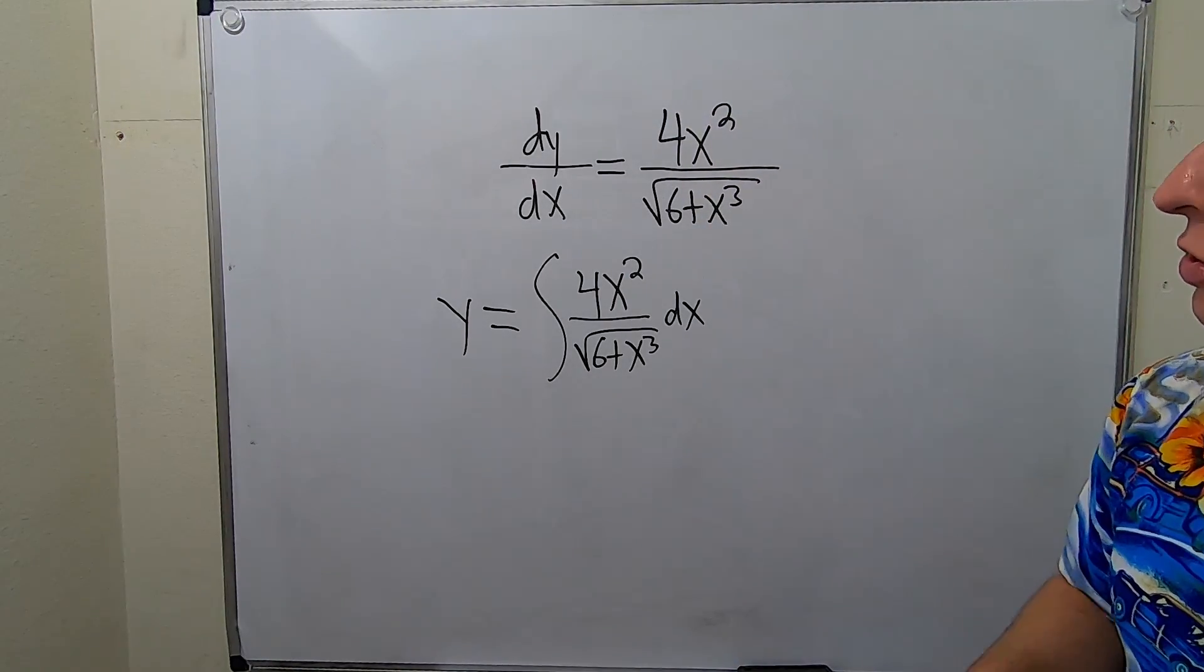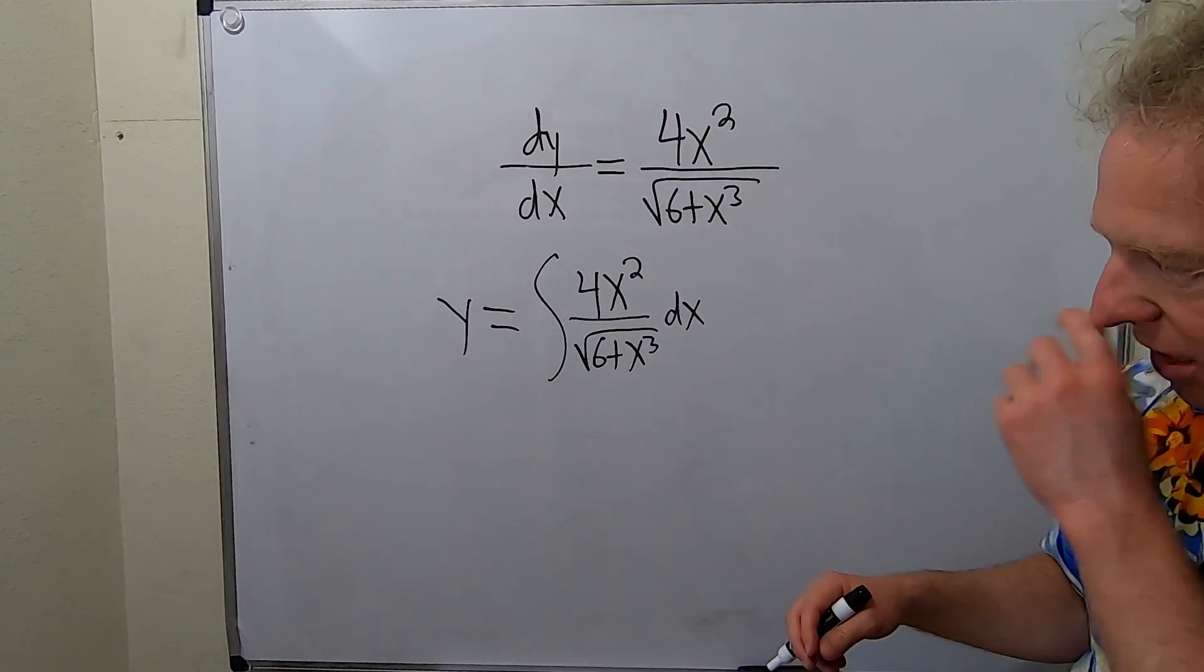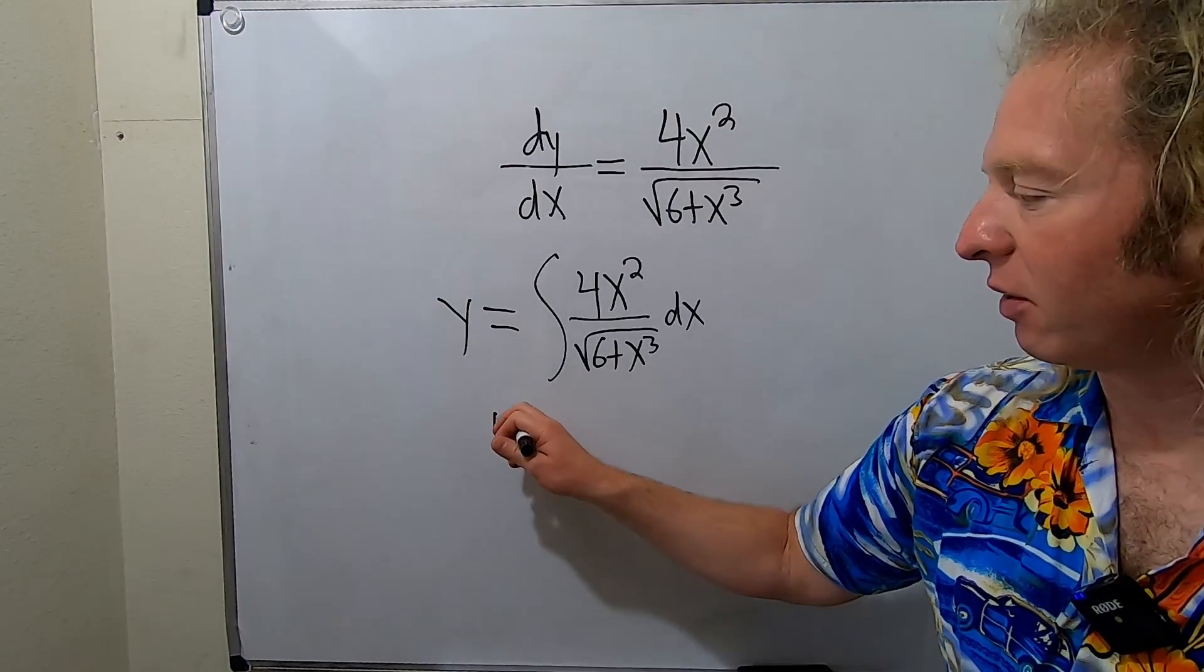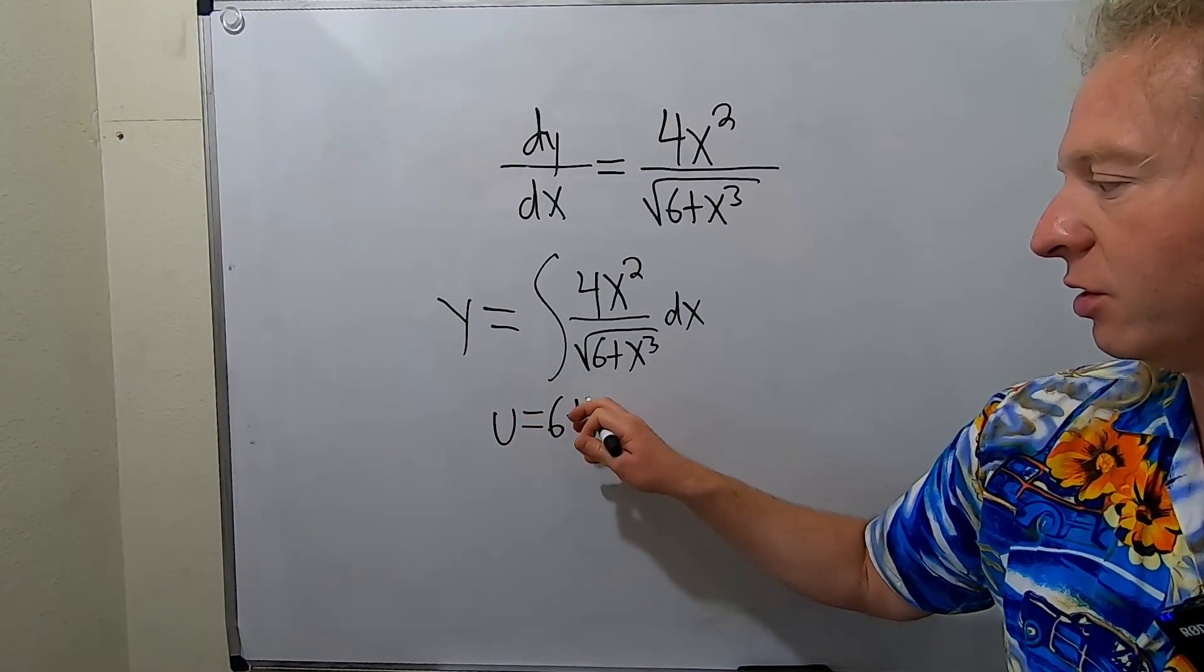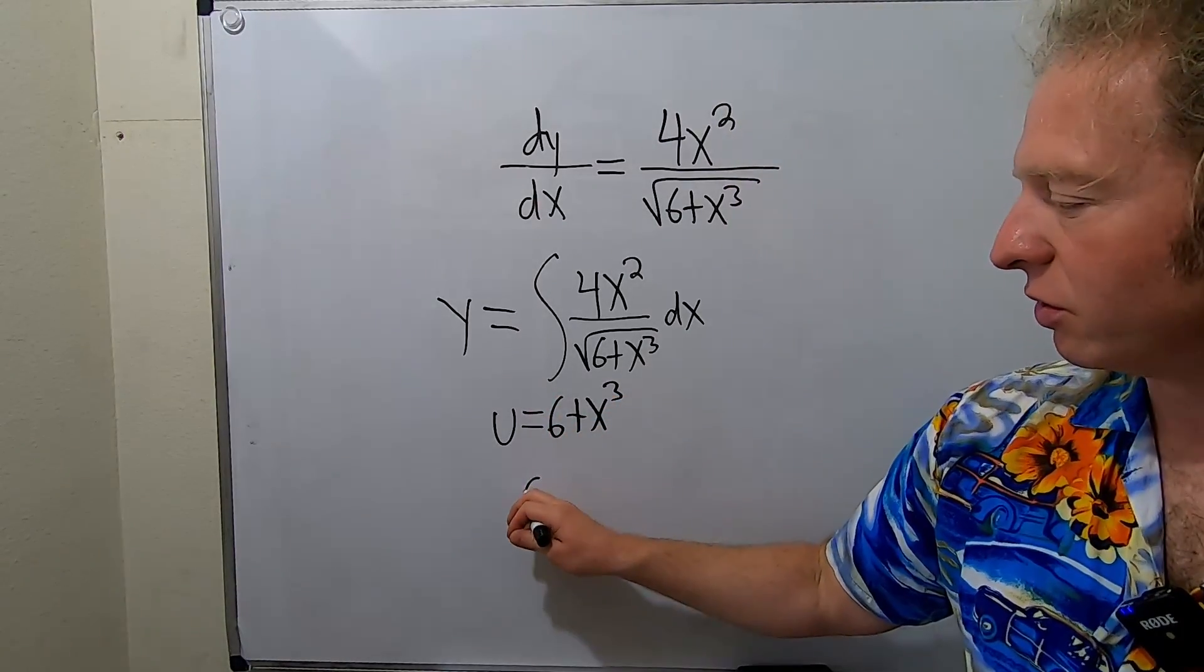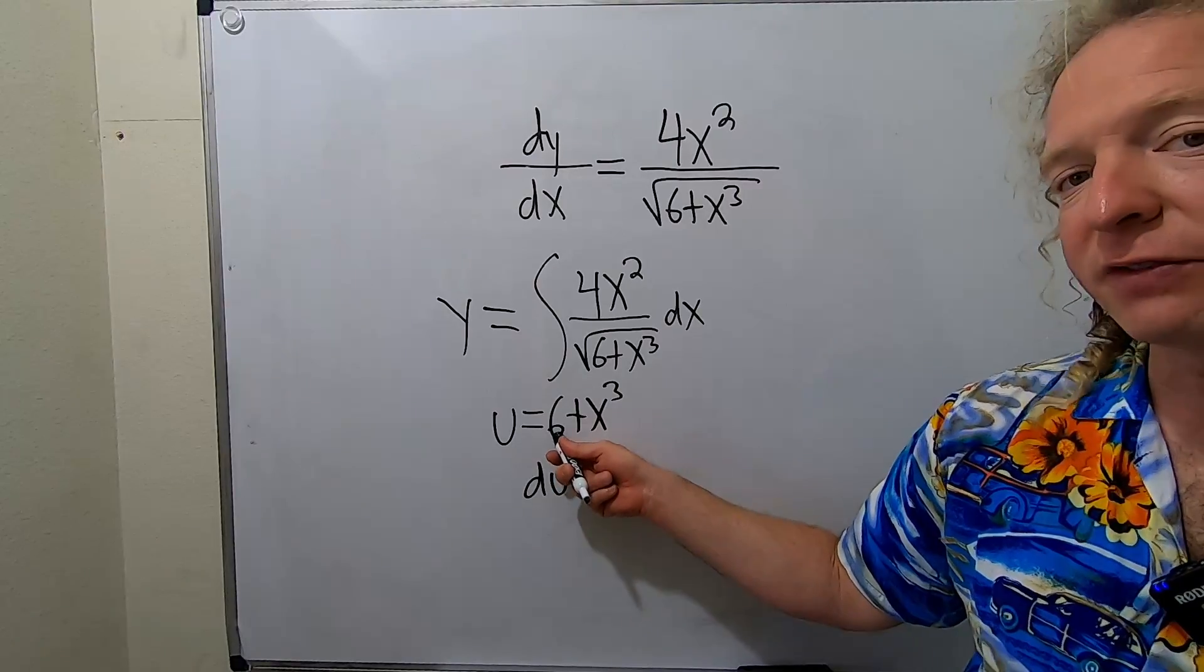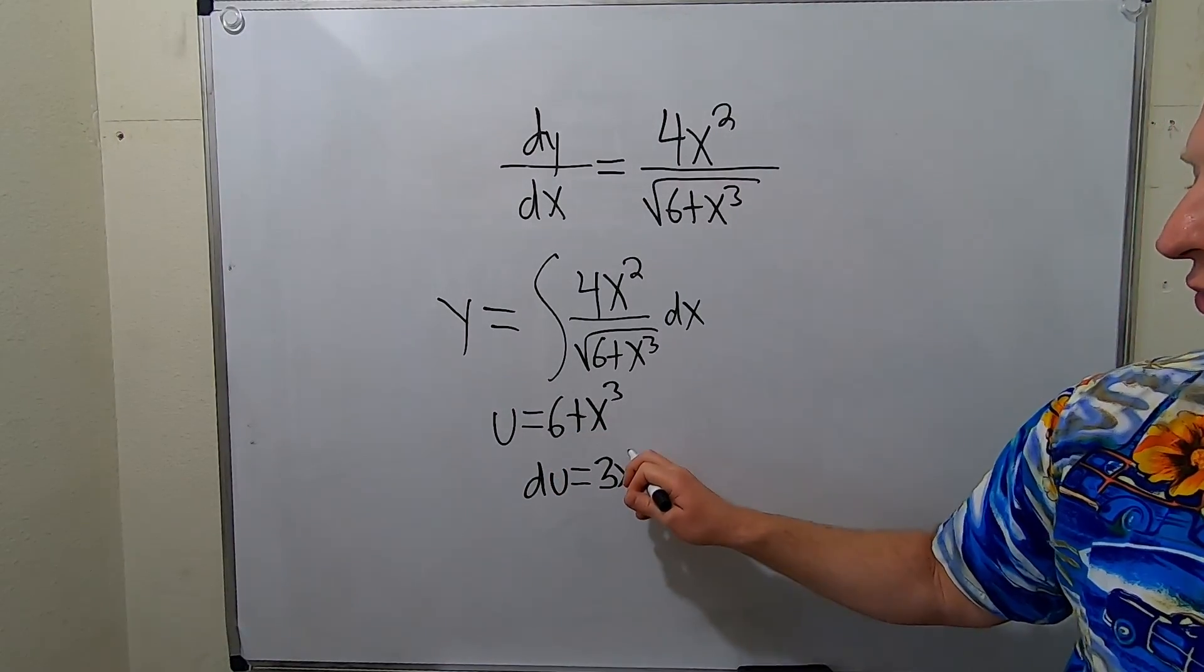Whenever you're using u substitution, you want to let u be your inside piece. So in this case here, the inside piece is what's inside the square root. So typically that works. So u is equal to 6 plus x cubed. Now we're going to compute du. So du, that's the derivative of u. The derivative of 6 is 0. This derivative here will be 3x squared dx.